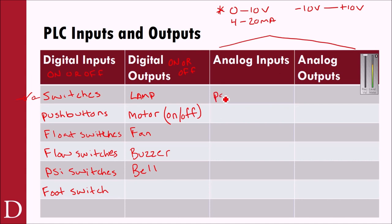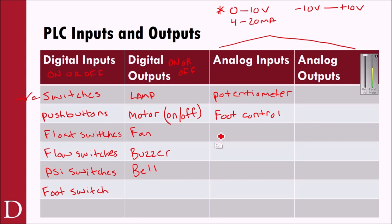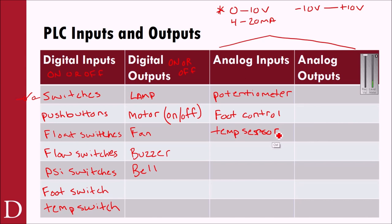An analog input could be something like a potentiometer — think of it like a dimmer switch in your living room where we control the lamp level, not just turning it on or off. Other analog inputs include a foot control that varies between 0 and 10 volts instead of just being on or off, and a temperature sensor. A temperature sensor reads 0 to 10 volts — so at 0 degrees Celsius you read 0 volts, and at 100 degrees Celsius you read 10 volts.